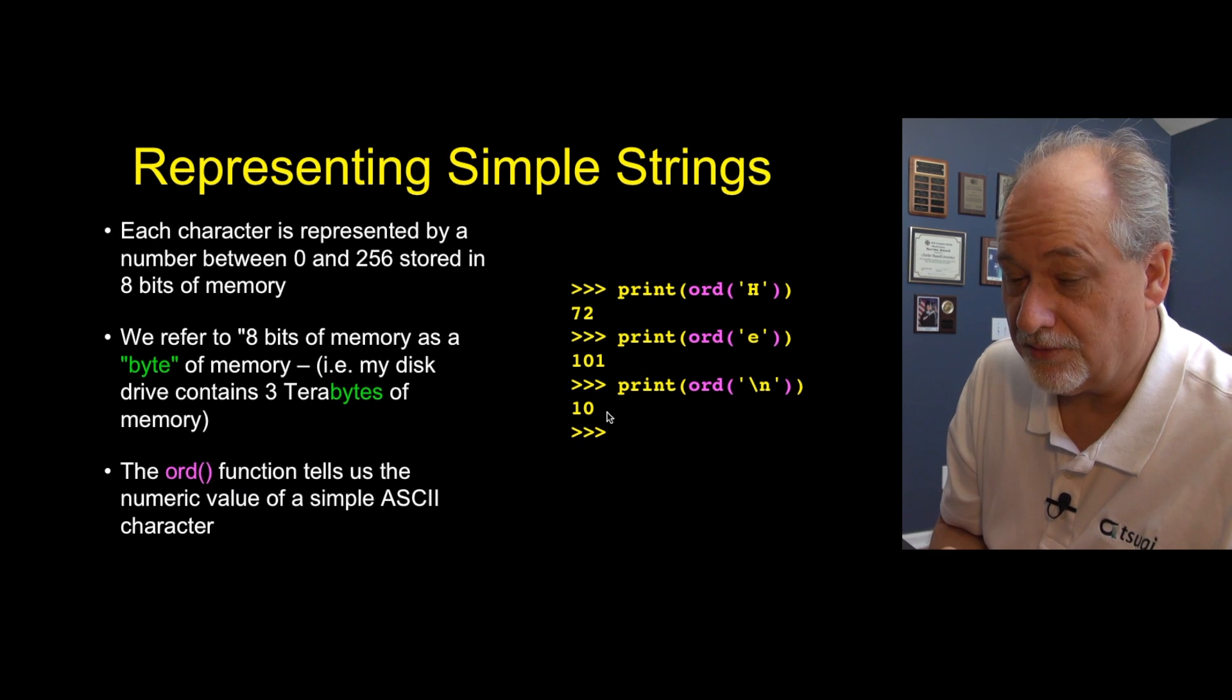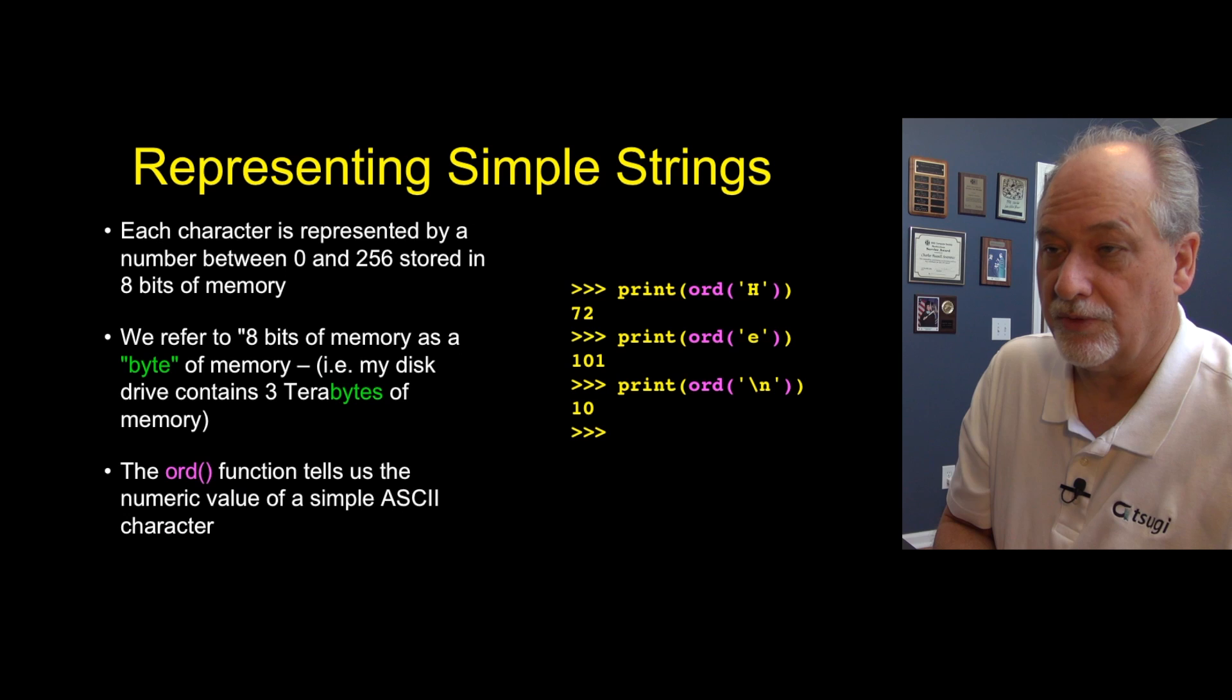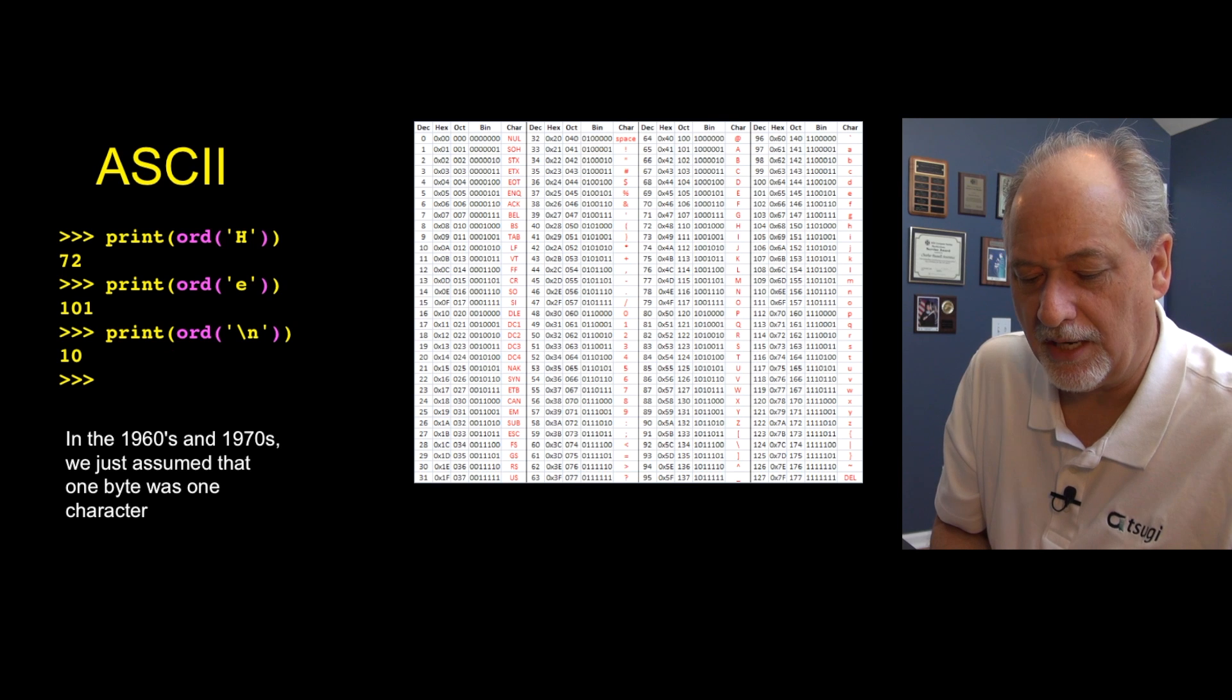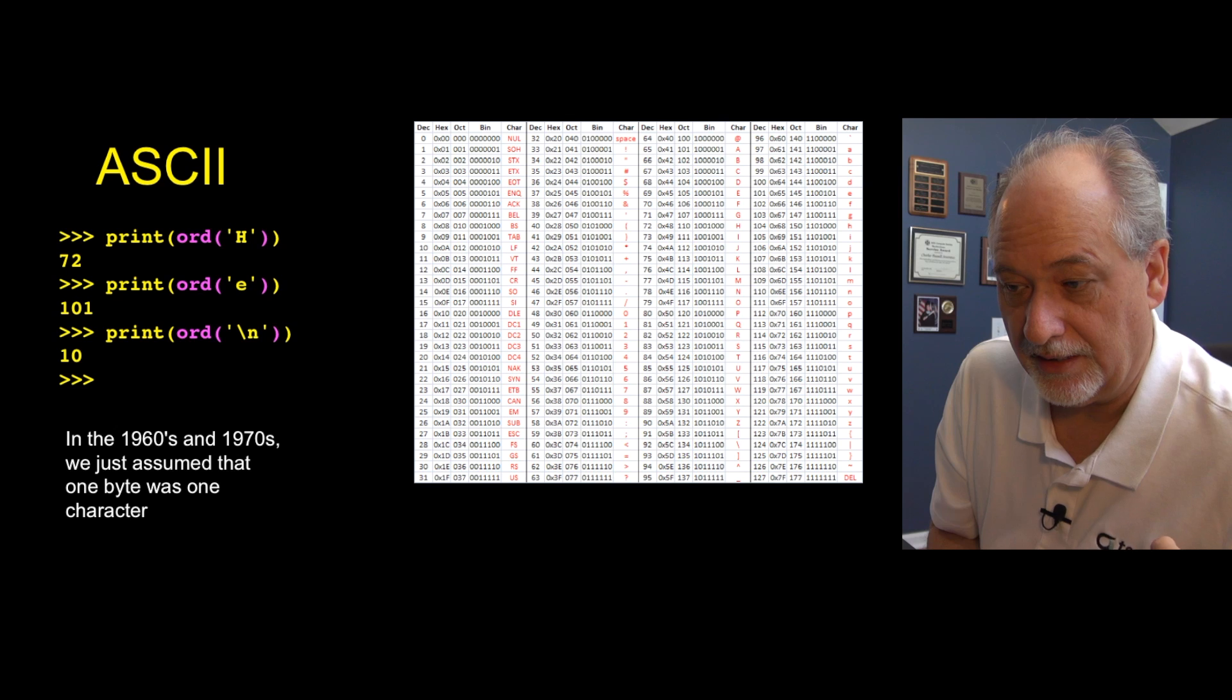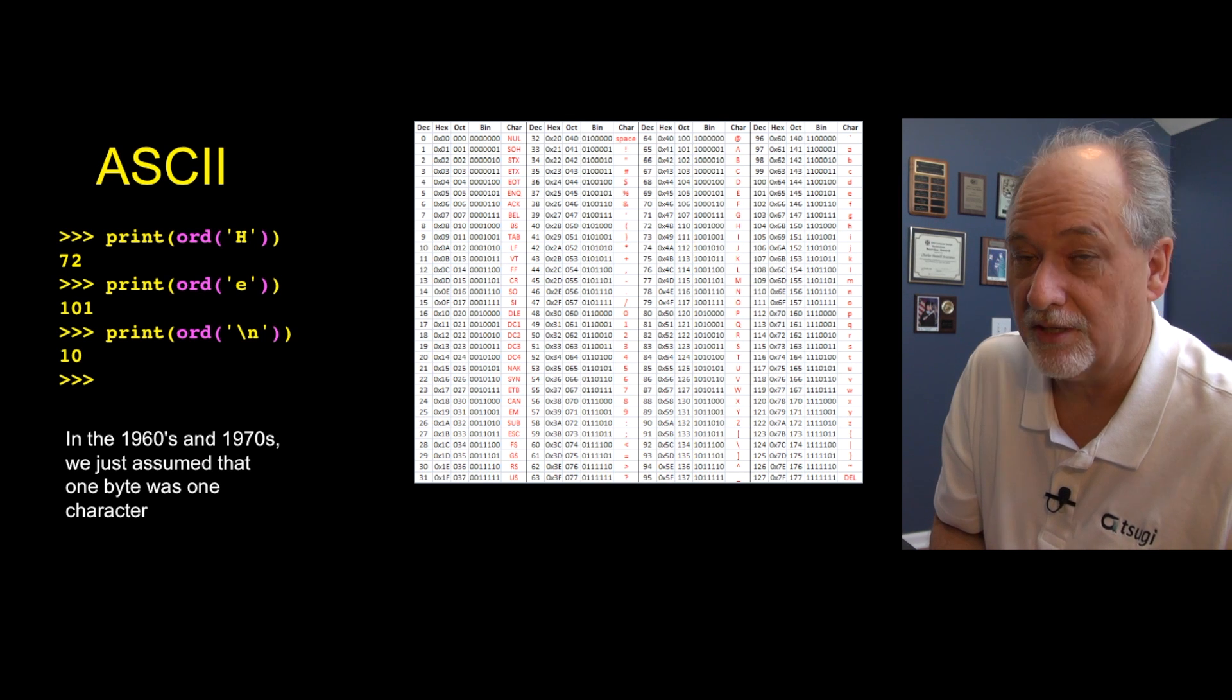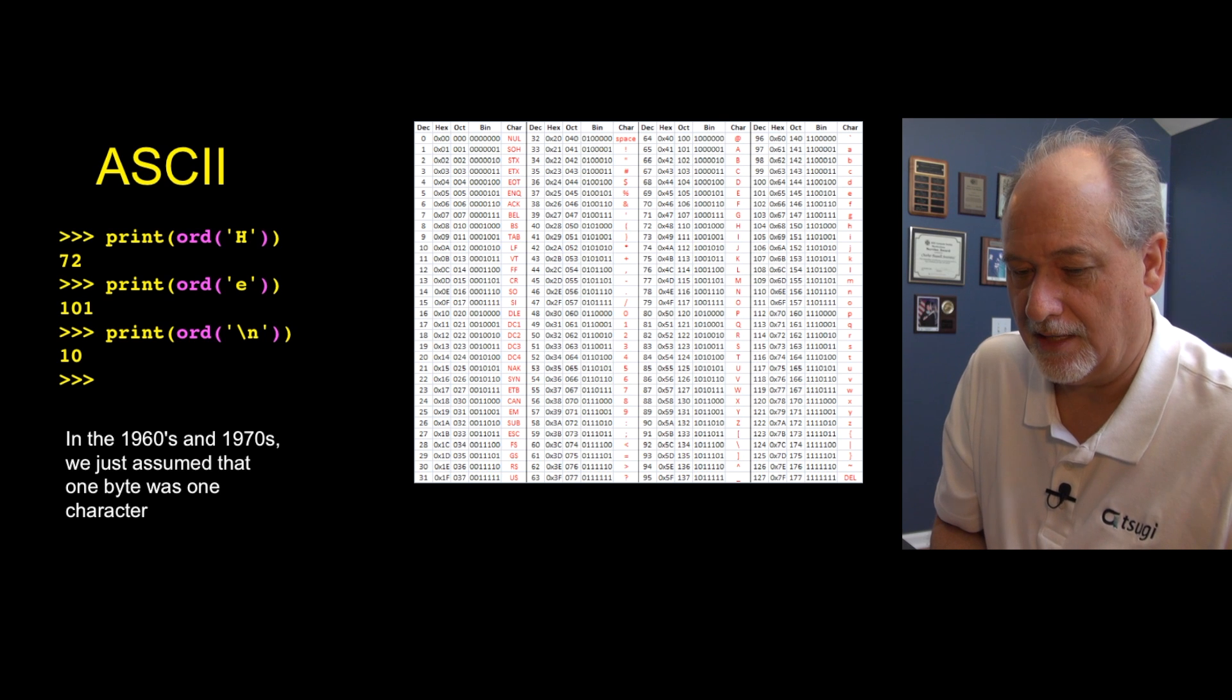And so again, in the early days, when strings were simple, we just represented them as one byte per character. But the problem is, as we have gotten more complex in today's modern world, it's simply unacceptable to say that the only thing computers can understand is ASCII.